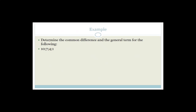Now let's look at a better example. They've asked us to determine the common difference D and the general term for the sequence 10, 7, 4, 1. To get from 10 to 7 we subtract 3; from 7 to 4 we subtract 3; from 4 to 1 we subtract 3. So the common difference D equals minus 3. In maths you're really always adding a negative number. So our common difference is minus 3.